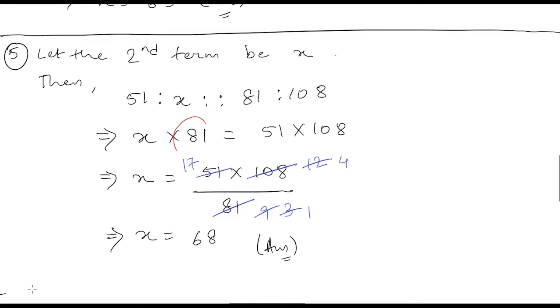Again, we are going to take 81 to the other side and X will remain on this side. So X is equal to 51 into 108 divided by 81. And on solving this, we are going to get X equals to 68. Therefore, the second term is 68, and this will be the answer.